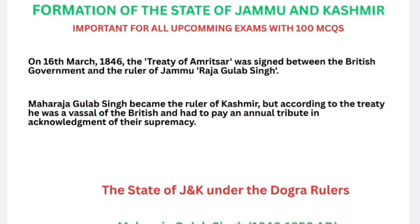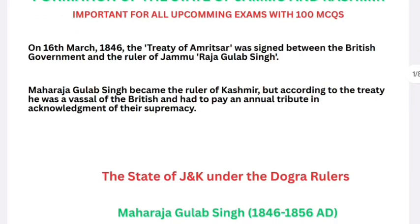So here, Maharaja Gulab Singh became ruler of Jammu and Kashmir. He was a ruler of Kashmir, but as a vassal. What is a vassal? A vassal is a person who is granted land by a lord. At that time, Kashmir was a princely state. Gulab Singh was assigned to Kashmir, and Kashmir had to pay tribute under the Treaty of Amritsar — an amount in rupees as tribute and acknowledgement of British supremacy.